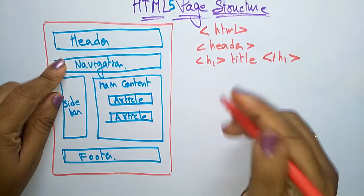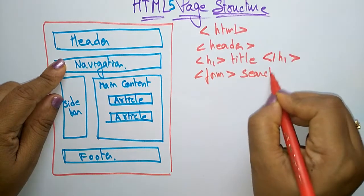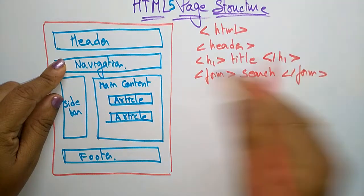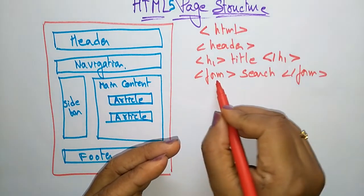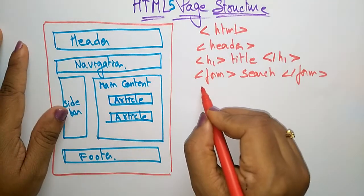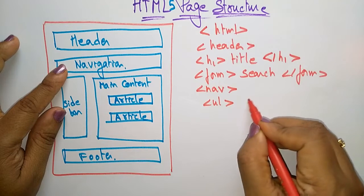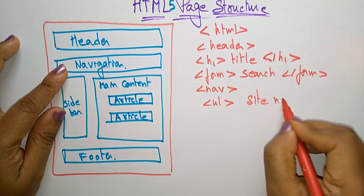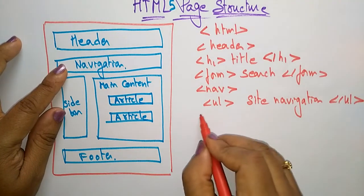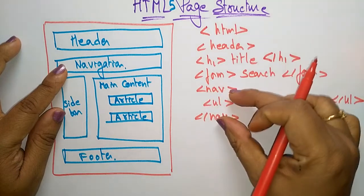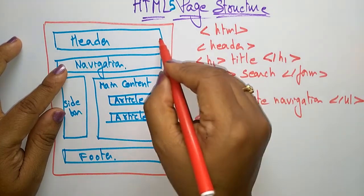After that, write the navigation. Inside the navigation, add a form with a search field — write the form tag with search and close it with slash form. Then open the nav tag for navigation, write the site links inside, and close the navigation tag. Finally, close the header tag.